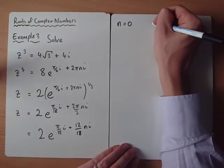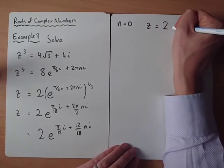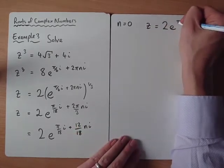So obviously, 2 thirds would be the same as 12 eighteenths. And then now, when I sub in n equals 0, I would get 2e to the π over 18. If n equals 1,